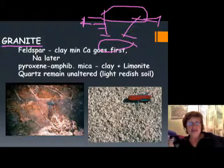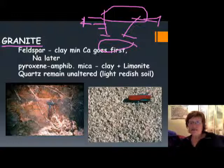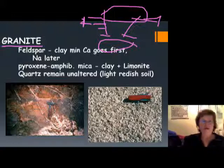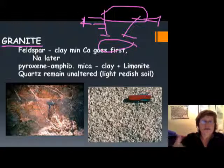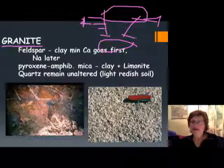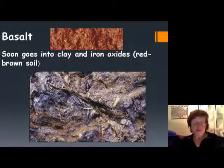Biotite, pyroxene, and amphibole have iron in them, so most of the time the soil forming from these minerals is going to be reddish. If there was quartz in the rock it will still have quartz, so the soil won't be really compact — it will have a kind of lightening effect from the quartz.